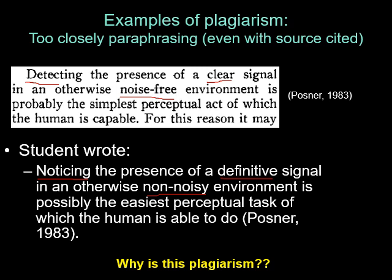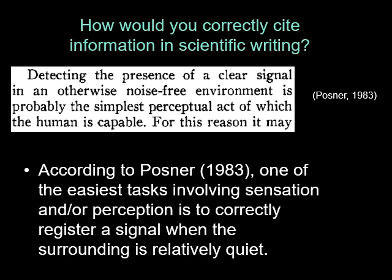So what should you do? You should completely rewrite the sentence without changing its meaning. For example, Posner's original text says: 'detecting the presence of a clear signal in an otherwise noise-free environment is probably the simplest perceptual act of which the human is capable.' A proper rewrite would be: 'According to Posner (1986), one of the easiest tasks involving sensation and perception is to correctly register a signal when the surrounding is relatively quiet.' You are completely changing the sentence structure while the meaning is still intact.